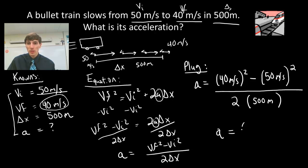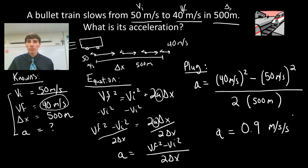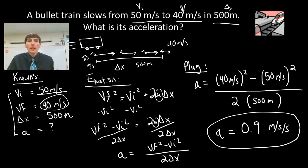The final answer is negative 0.9 meters per second squared. The units work out as meters per second per second, or meters per second squared. Circle that final answer — and there it is. That's KIPA.